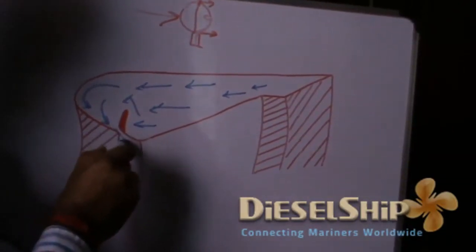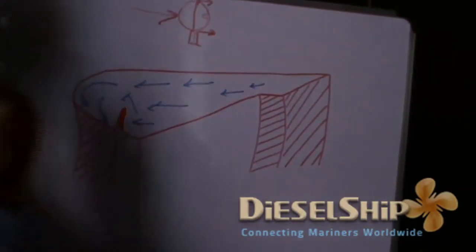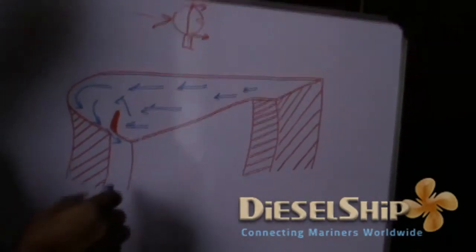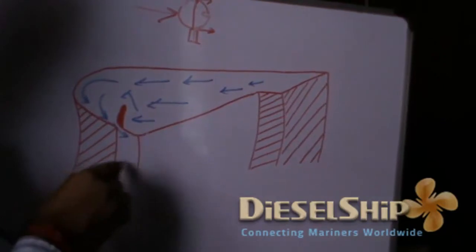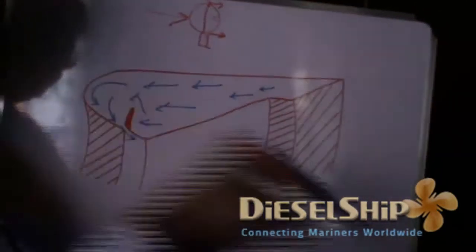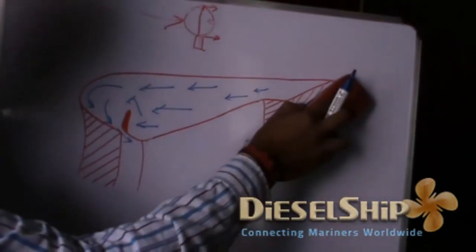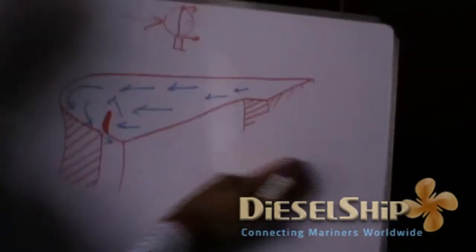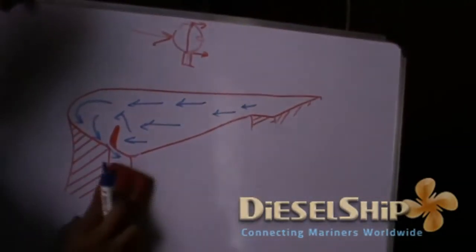And then it takes a turn. It comes out through the small aperture or small opening. Now this is the cross section view.